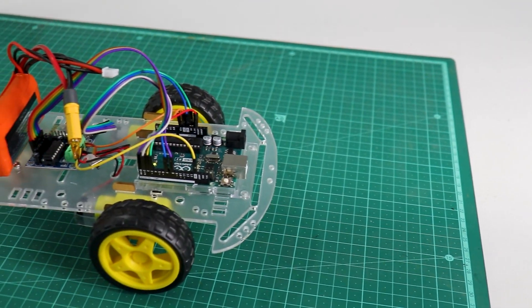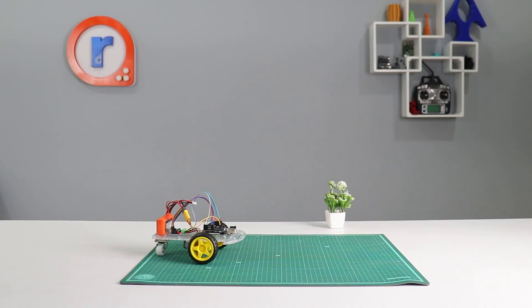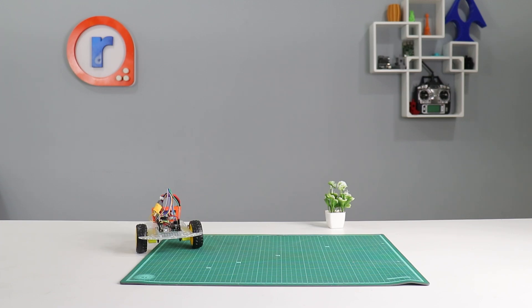Hey everyone, welcome back to your channel. Hope you are doing great. We are back with another exciting project. Today we are going to build a Bluetooth control car using HC05 Bluetooth module and Arduino Uno.